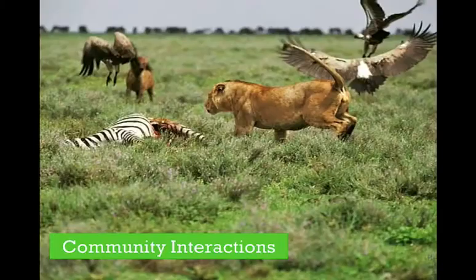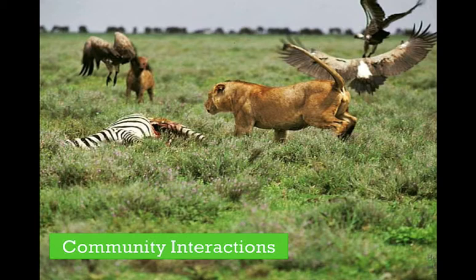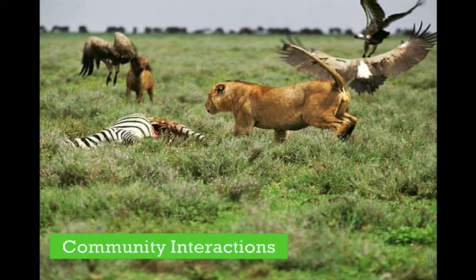A community is all of the living things in one area or specific ecosystem, including all of their different interactions. Community interactions limit and shape each other's populations through time. We saw this with predator-prey relationships: when prey shows biotic potential and increases, predators follow with a lag, then once predator numbers are high, prey crashes — and soon after, predators crash too because their food source is gone.